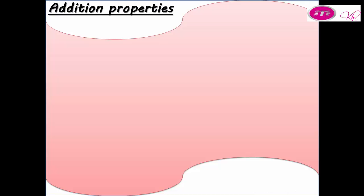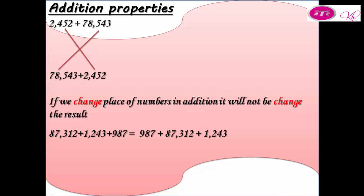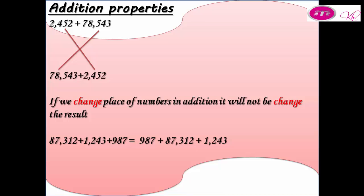Addition properties: 2,452 plus 78,543. If we change the place of the two numbers: 78,543 plus 2,452, it is equal to before. That means if we change the place of numbers, it will not change the result. The place of numbers will not affect the result.